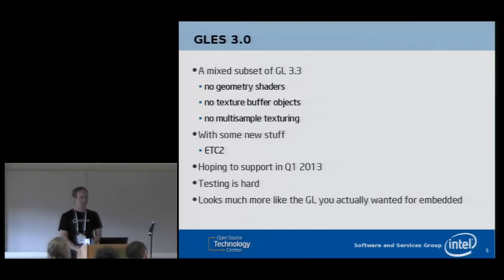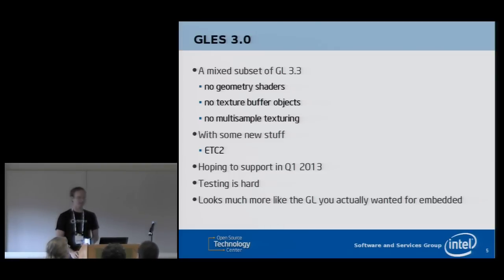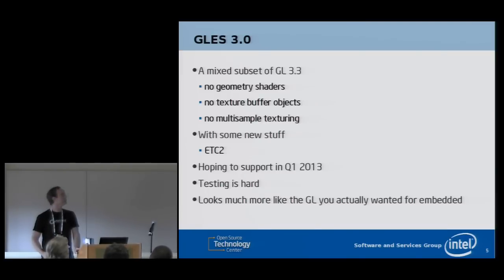The other big project has been GLES 3.0, just announced at SIGGRAPH a week or two ago. It's the follow-on to GLES 2. Like how GLES 2 took GL 2 and chopped a bunch of stuff out, this time they took GL 3.3 and chopped some things out — there are no geometry shaders, no texture buffer objects, no multisample texturing. But almost everything is still in place. Unlike GLES 2 where they cut nearly all texture formats except RGBA 8, this time they've left in almost all texture formats and shading language. GLES 3.0 looks like the embedded subset API you actually wanted, not what you got in GLES 2.0.